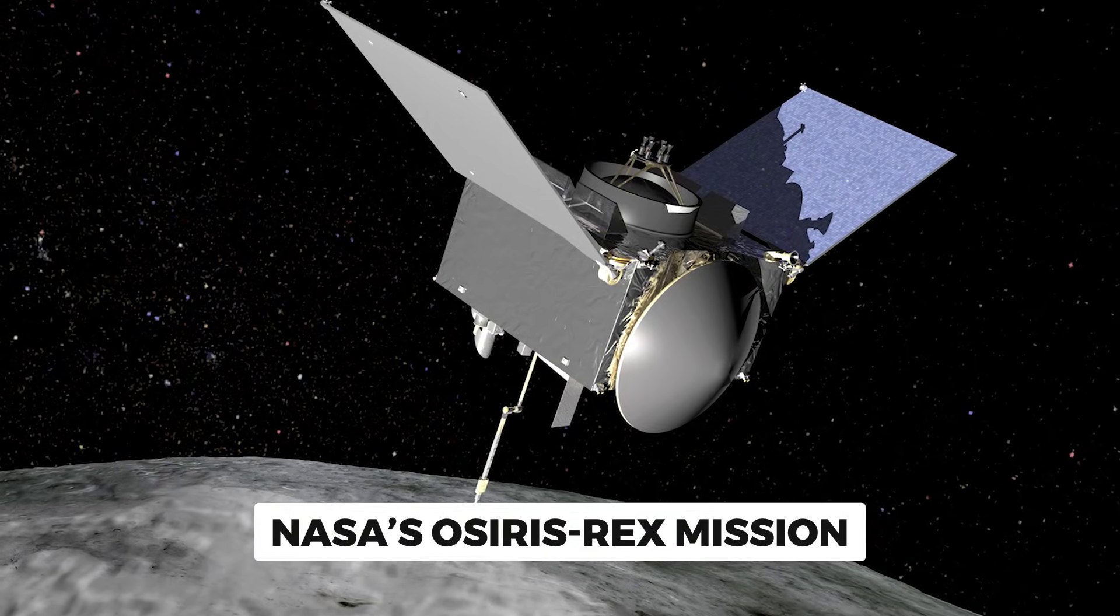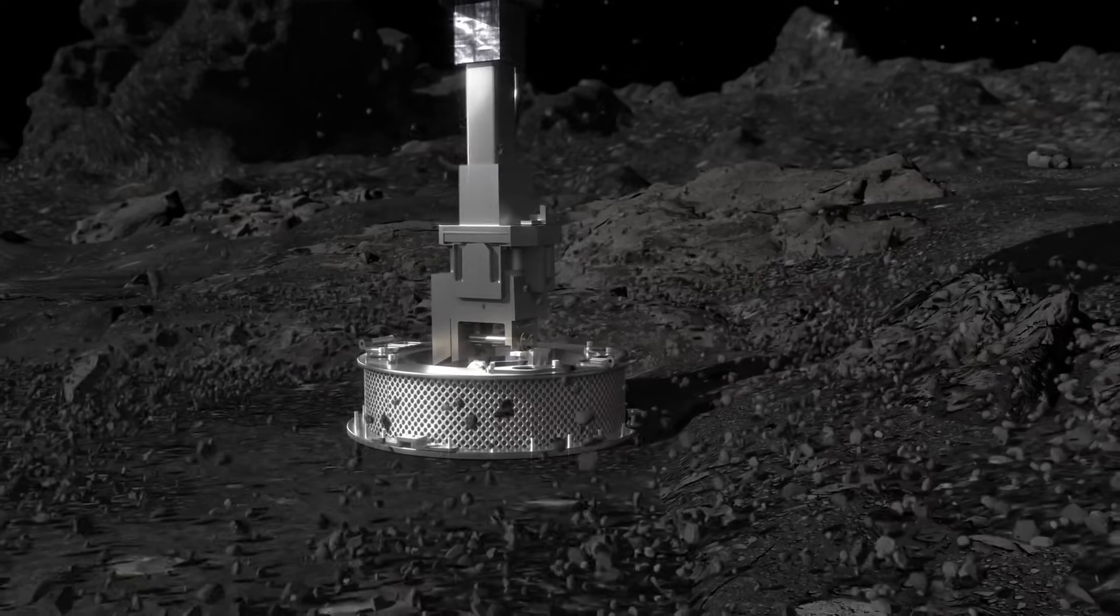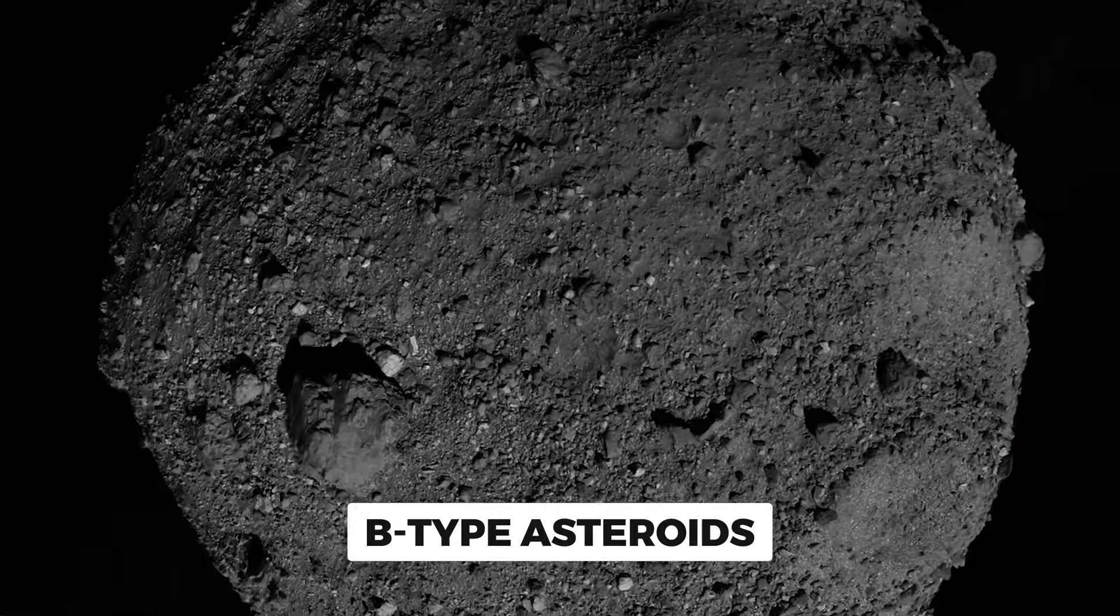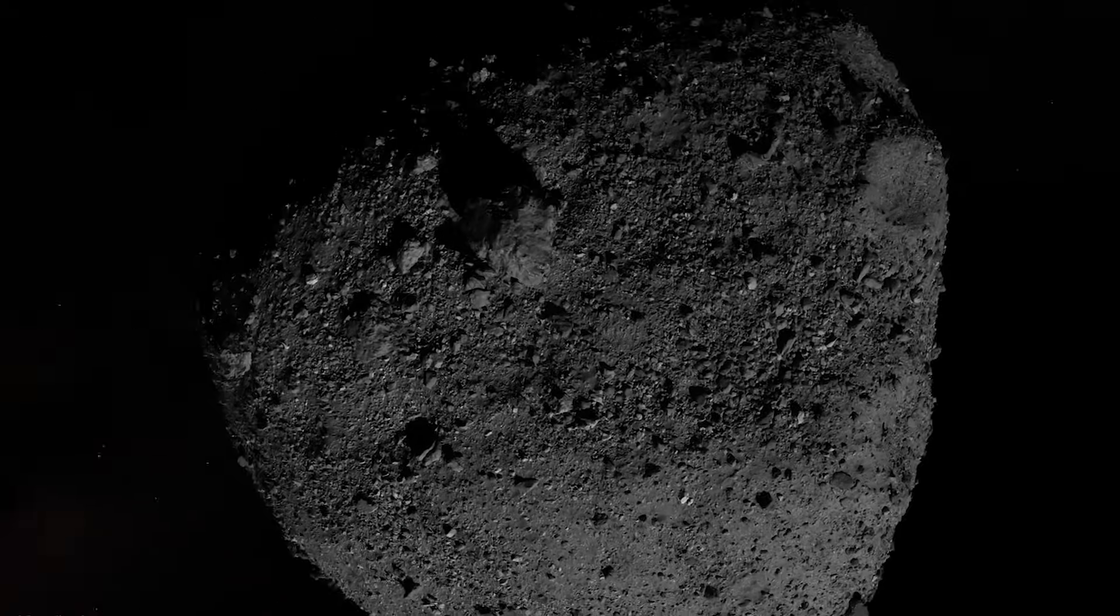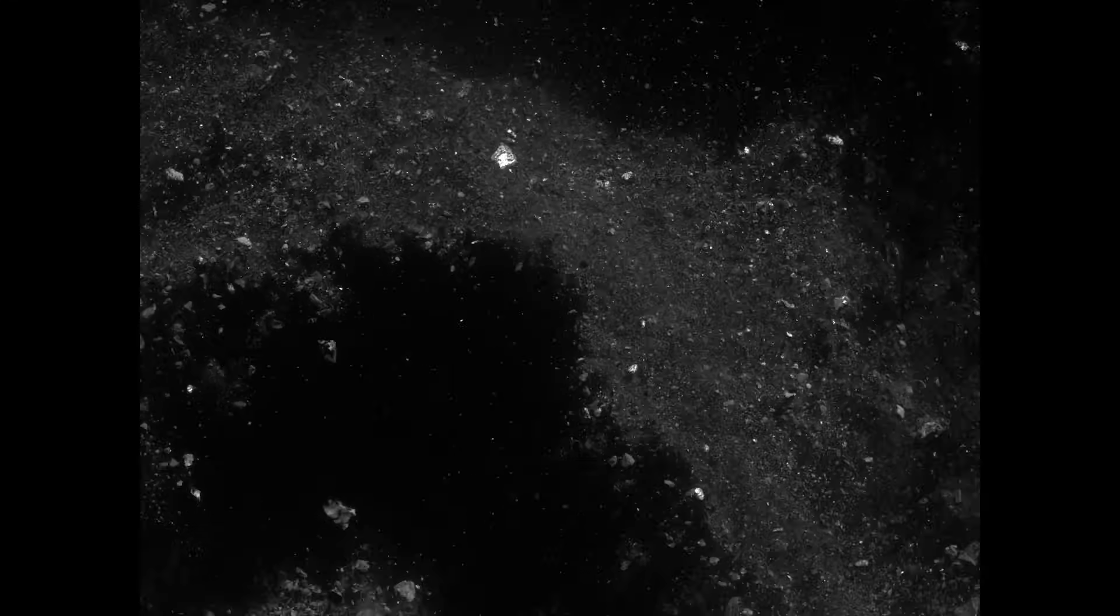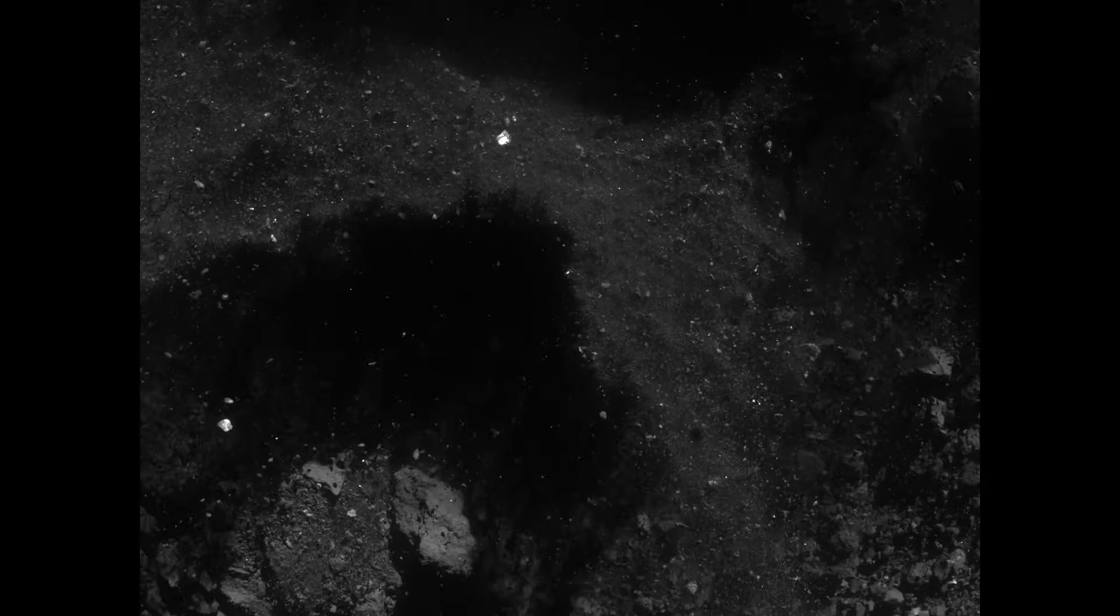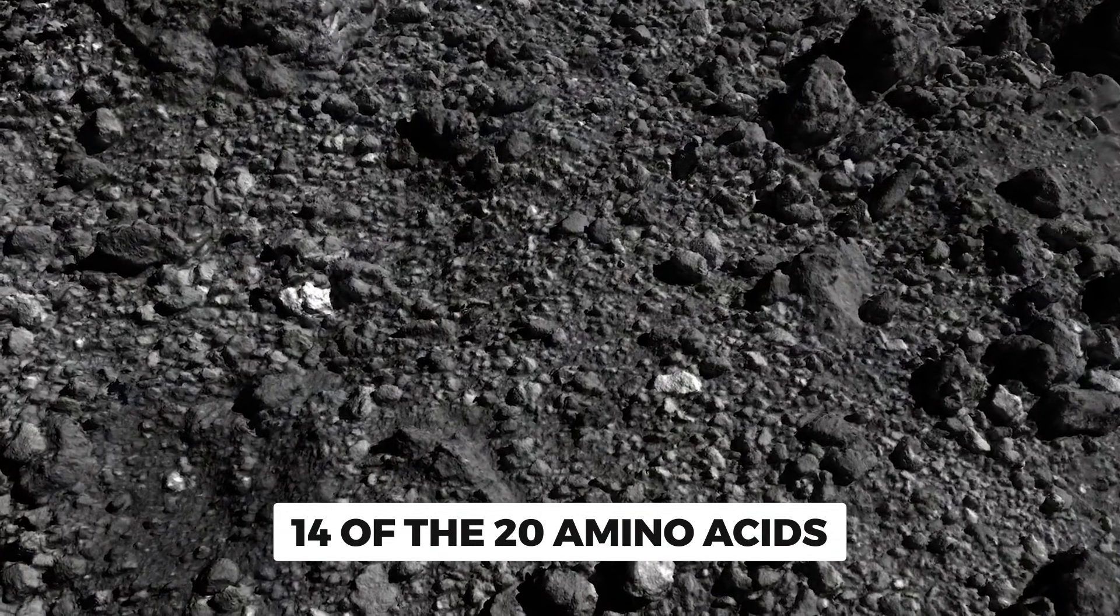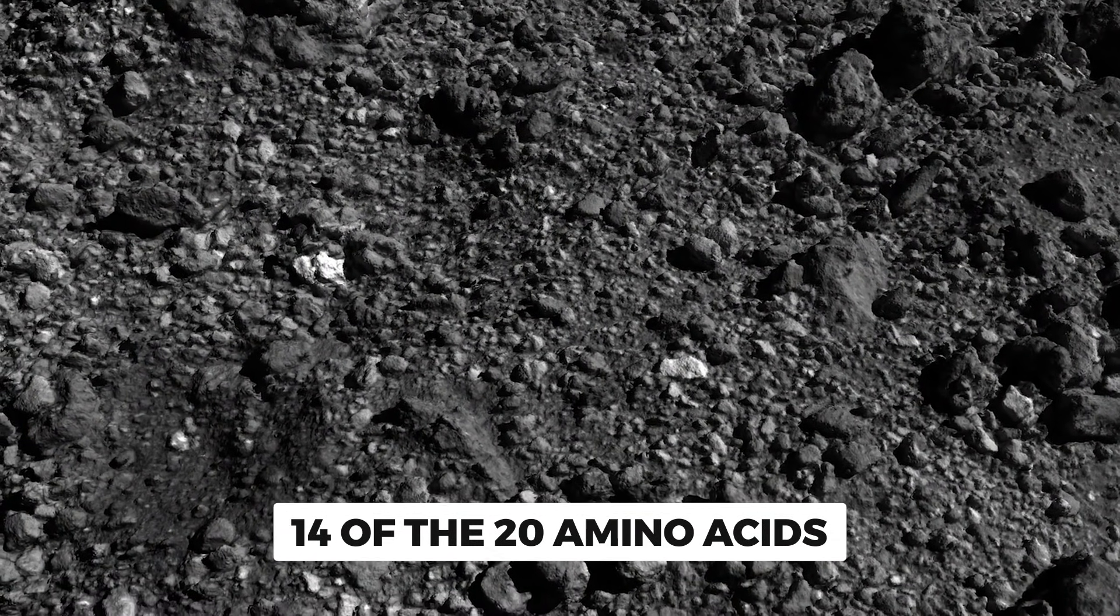Recent findings from NASA's OSIRIS-REx mission, which returned samples from asteroid Bennu, showed that even B-type asteroids, which are more processed by solar radiation than distant objects, contain all the essential building blocks of life. Scientists found glucose, ribose, and 14 of the 20 amino acids essential for life as we know it.